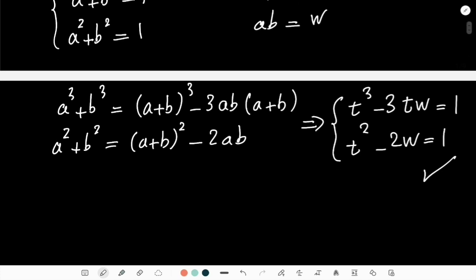Because in the second equation, you just find w from the second equation, then I get from this one. I get w = (t² - 1)/2.